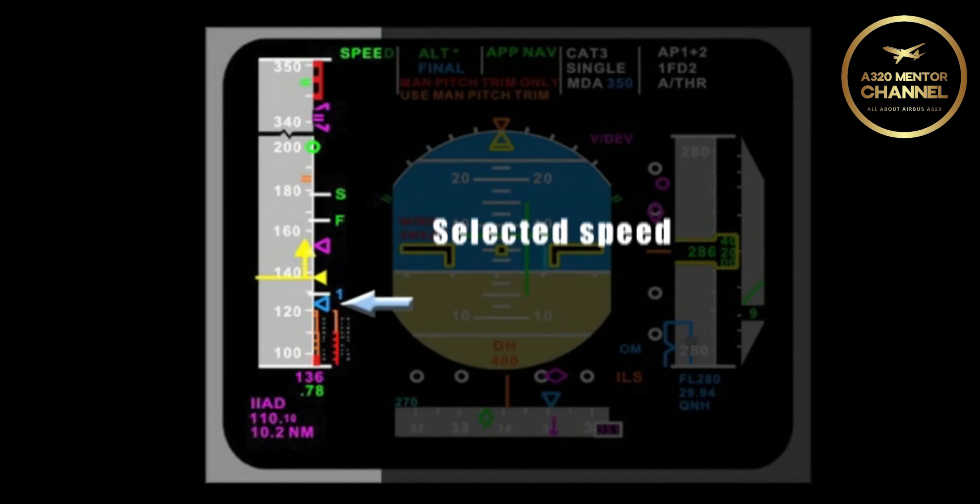What does that blue bug represent? That represents a selected speed. Remember, blue to you, the pilot. Just above the blue speed bug is a blue 1. What does that represent? That is V1.